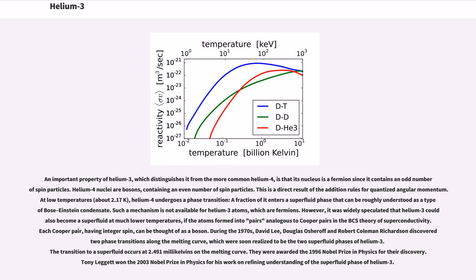An important property of helium-3, which distinguishes it from the more common helium-4, is that its nucleus is a fermion since it contains an odd number of spin-half particles. Helium-4 nuclei are bosons, containing an even number of spin-half particles. This is a direct result of the addition rules for quantized angular momentum. At low temperatures, about 2.17 K, helium-4 undergoes a phase transition. A fraction of it enters a superfluid phase that can be roughly understood as a type of Bose-Einstein condensate. Such a mechanism is not available for helium-3 atoms, which are fermions. However, it was widely speculated that helium-3 could also become a superfluid at much lower temperatures, if the atoms formed into pairs analogous to Cooper pairs in the BCS theory of superconductivity. Each Cooper pair, having integer spin, can be thought of as a boson.